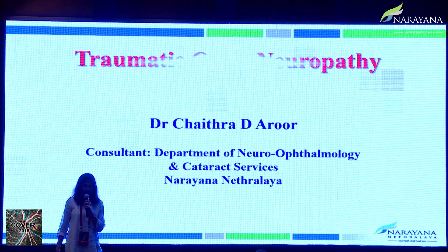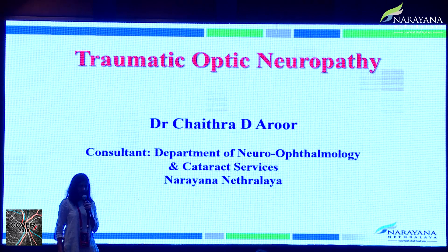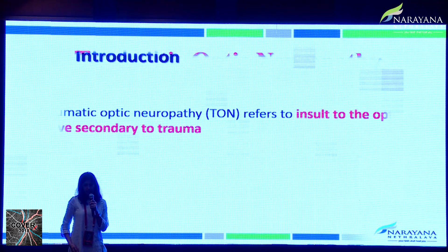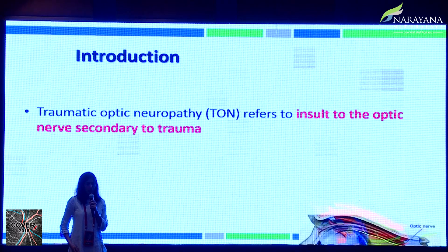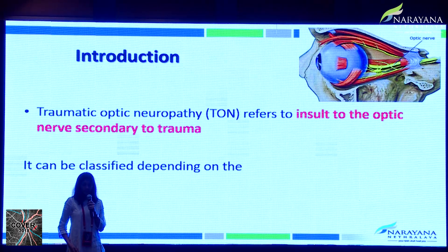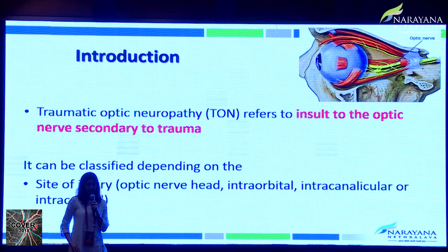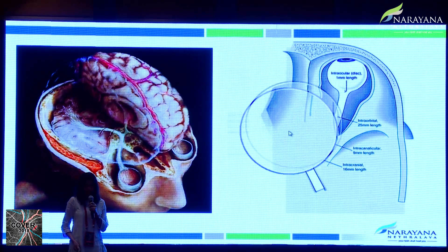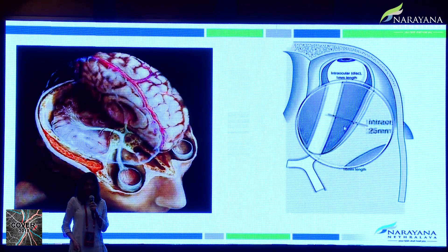I'll be speaking on Traumatic Optic Neuropathy. As the name suggests, it indicates trauma to the optic nerve secondary to an insult to the optic nerve. It can be classified based upon the site of injury — that is intraocular, intraorbital, intracanalicular, and intracranial.